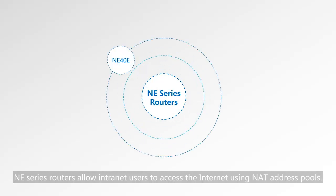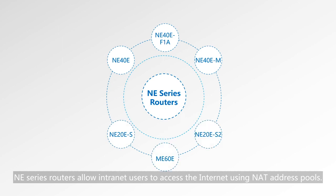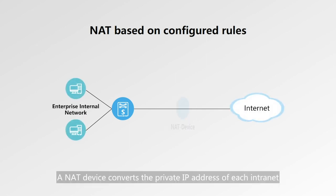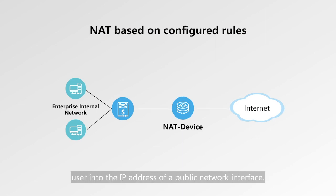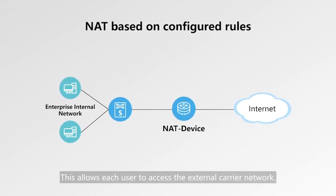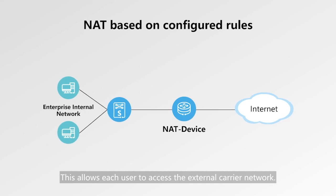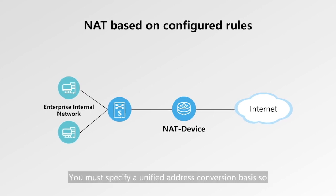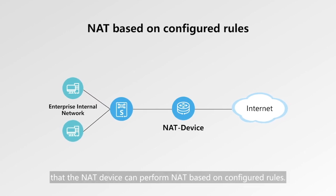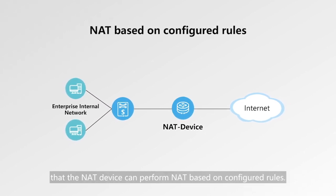Any series routers allow Internet users to access the Internet using NAT address pools. Traffic is transmitted from the Internet to an external carrier network. A NAT device converts the private IP address of each Internet user into the IP address of a public network interface, allowing each user to access the external carrier network. You must specify a unified address conversion basis so that the NAT device can perform NAT based on configured rules.